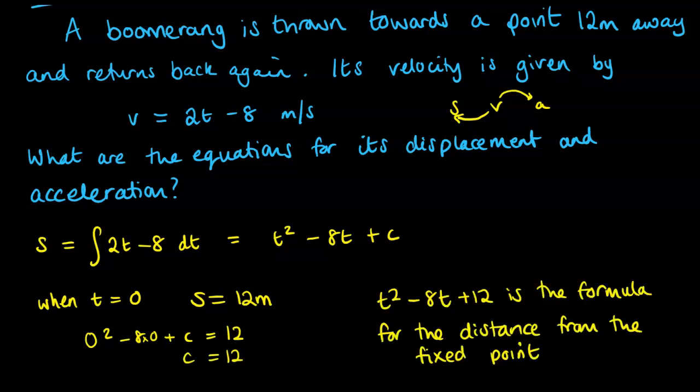And popping that into a sentence, we have t squared minus 8t plus 12 is the formula for the distance from the fixed point.